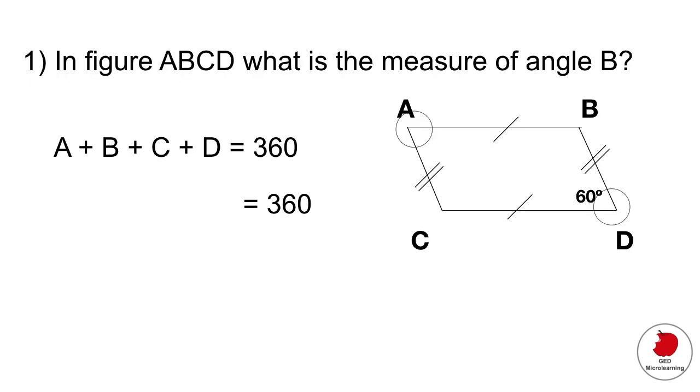So knowing that, we can go back to our question and say that angle A plus B plus C plus D equals 360. We know from the question that angle D is 60 degrees, so we'll plop that in there. Angle A and angle D are the same, so we'll plop that in there. We don't know what B and C are, so we'll call them X. And they're the same, so X plus X.